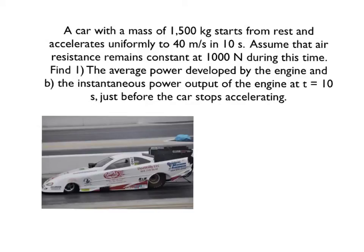In this problem, we're going to be exploring the difference between instantaneous power and average power for an object. The specific problem we're looking at is a car accelerating from rest — a car with a mass of 1500 kilograms starts from rest and accelerates uniformly, at a constant acceleration, to 40 meters per second in 10 seconds. Assume that air resistance remains constant at 1000 newtons during this time. We want to find the average power developed by the engine and also the instantaneous power output by the engine at exactly 10 seconds.